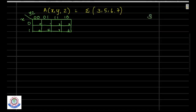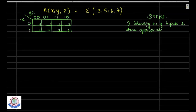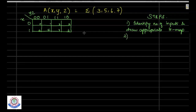To solve the problem using K-map, first identify the number of inputs and draw the appropriate K-map. This is the first step that we have done — we have identified that there are 3 inputs and drawn the 3-input K-map.